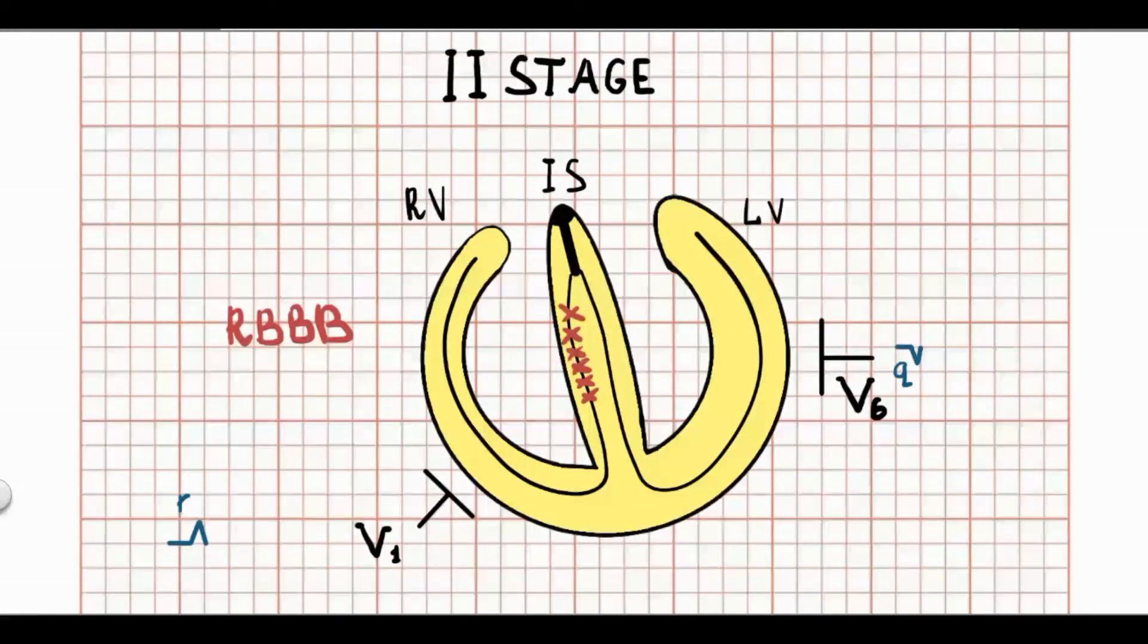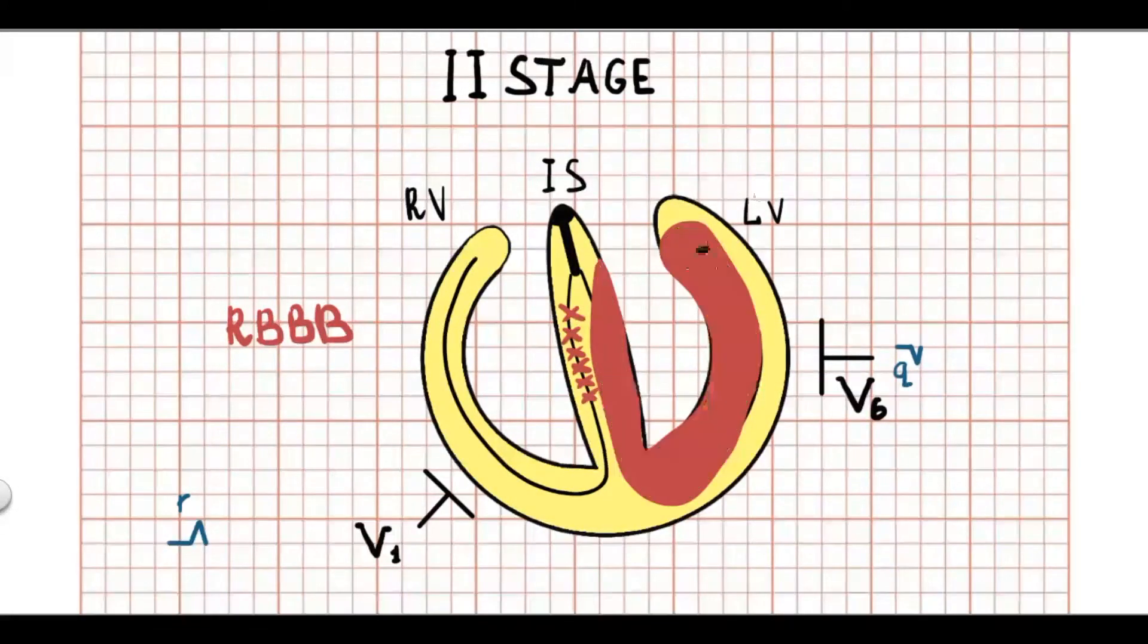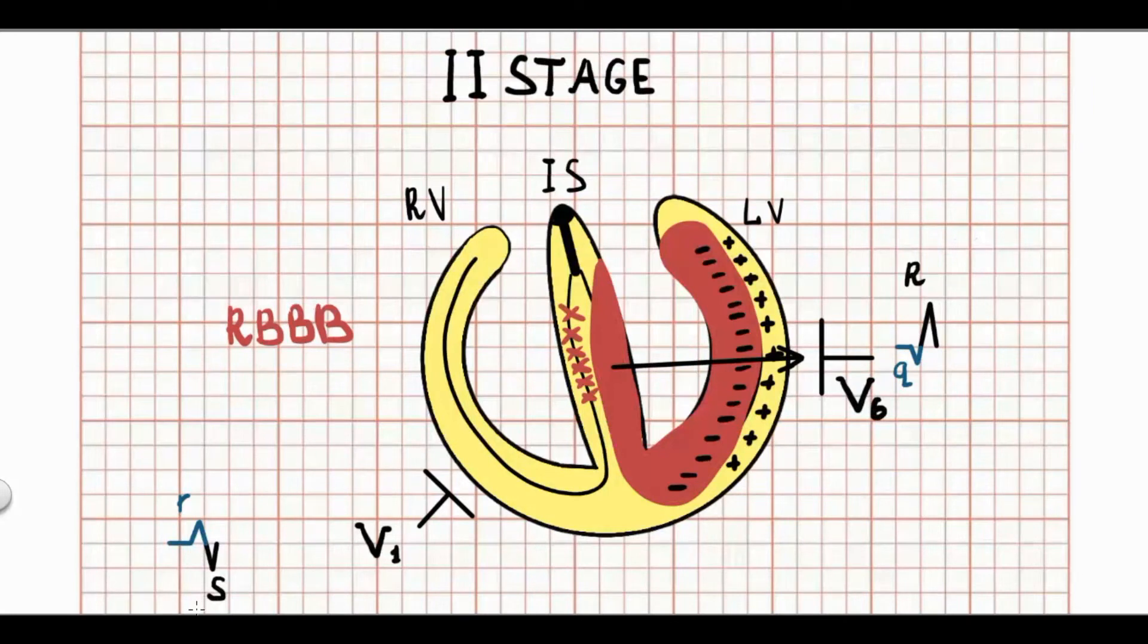The second stage is main mass ventricle depolarization. But right ventricle can't be depolarized because of the block. As a result all second stage represents depolarization of left ventricle. The resulting vector of depolarization goes to positive electrode of V6 and here we see tall R wave. And the same vector goes away from positive electrode of V1. So V1 shows deep S wave.